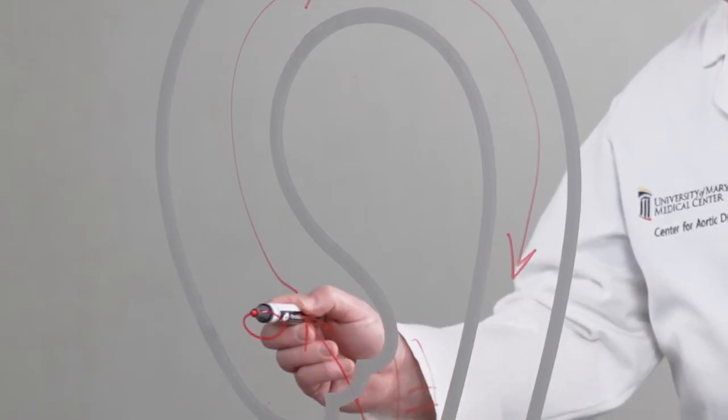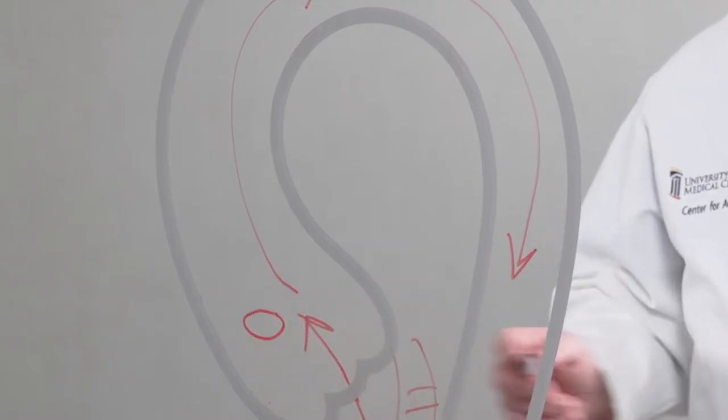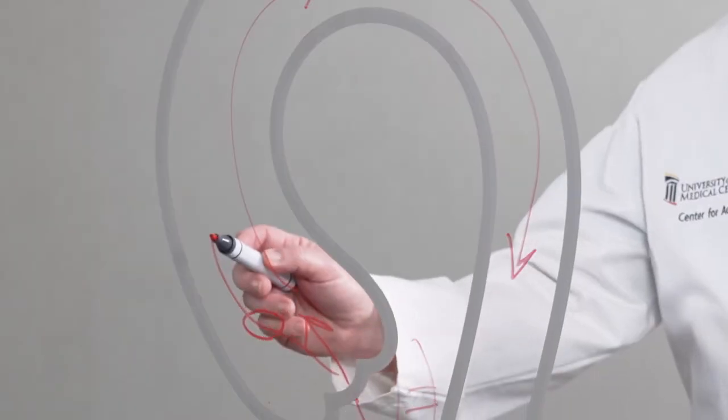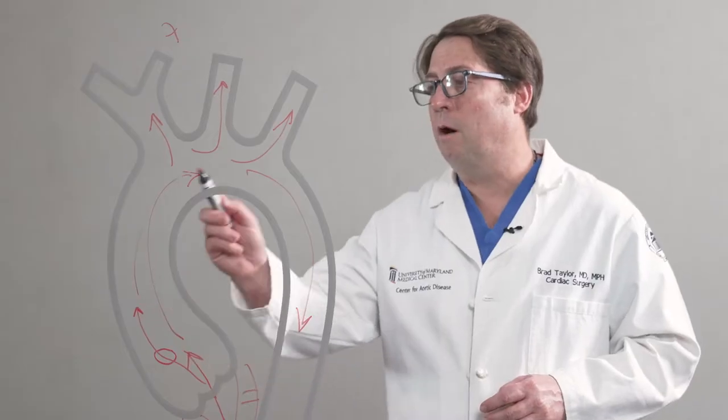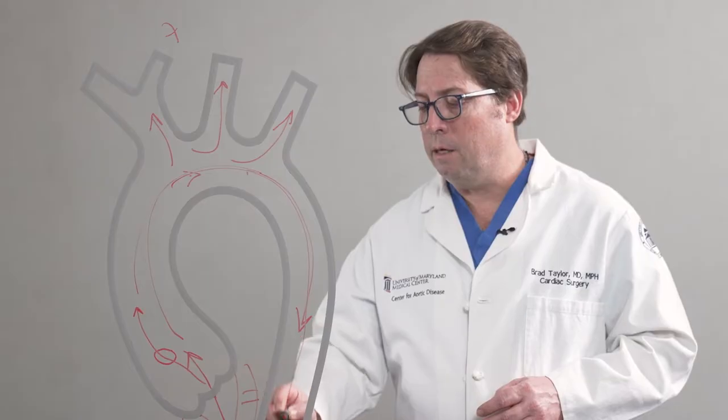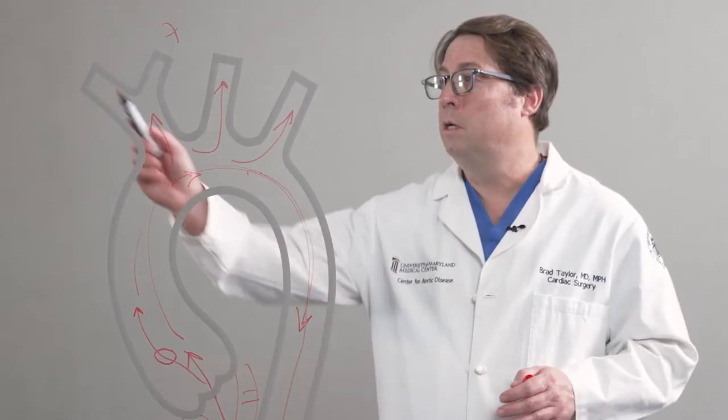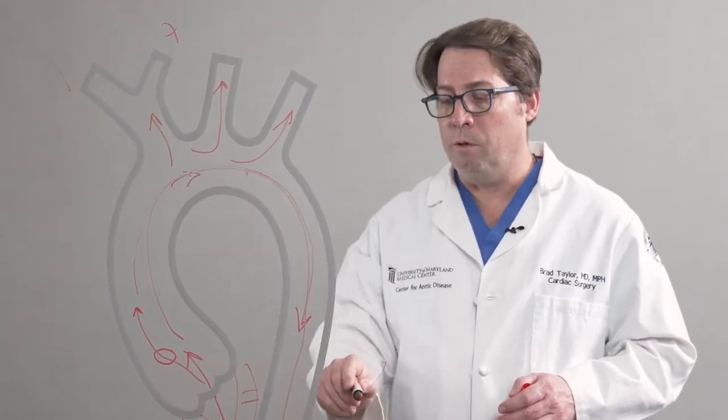There's a small risk that you can develop a tear, and if a tear develops in it, blood will then go in between the layers of the aorta and shear off and create a tear that can limit blood flow to your upper body and to your lower body.